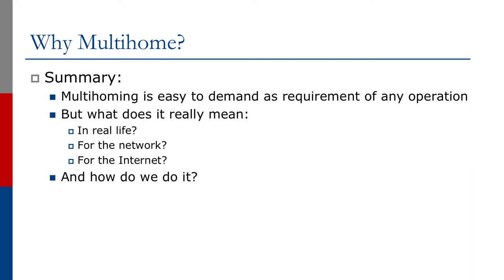So it's actually quite easy to demand multi-homing as a requirement of any operation — a C-level director or member of the company can make this a requirement. But what does it actually mean in real life? What does it mean for the network in question, for the internet, and how do we go about doing this? There's no command you can insert on the router that simply says 'BGP multi-home.' We actually have to sit down, study the BGP attributes, how to implement policies, and the relationships between autonomous systems out on the internet to work out what is best for our network and how we implement multi-homing.